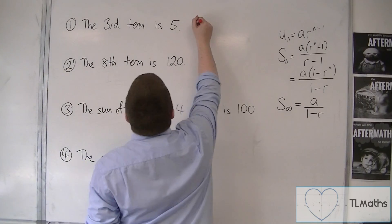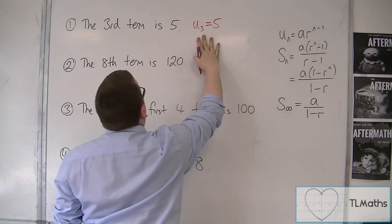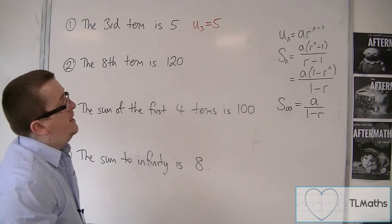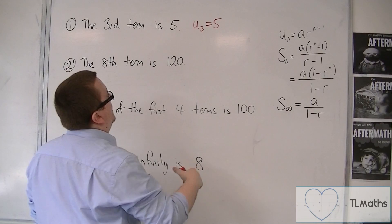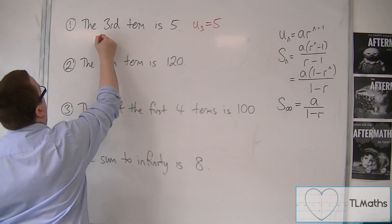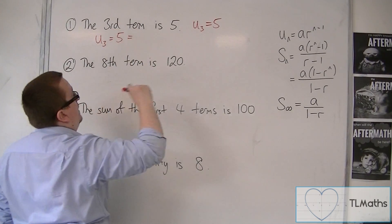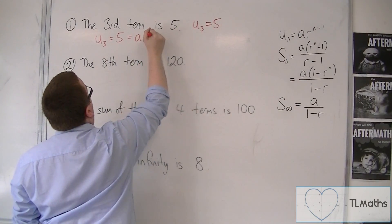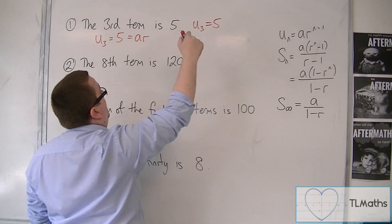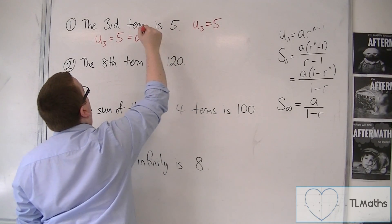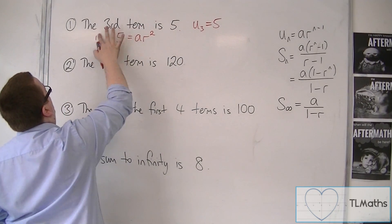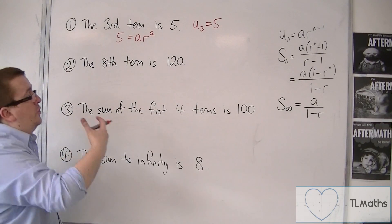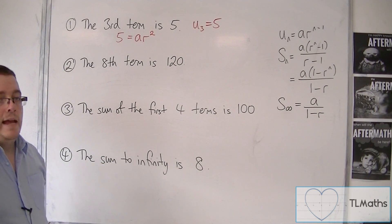So if we are told that the third term is 5, we can say that u3 equals 5. This uses the nth term formula. So we can then say that u3 equals a times r to the n minus 1, which is 3 minus 1, so that's r squared. We can write down that equation and use it in conjunction with another one to find a and r.